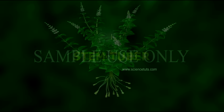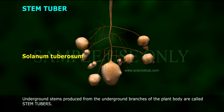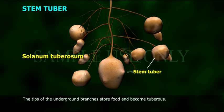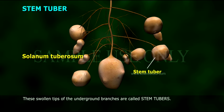Stem Tuber: Underground stems produced from the underground branches of the plant body are called stem tubers. The tips of the underground branches store food and become tuberous. These swollen tips of the underground branches are called stem tubers.